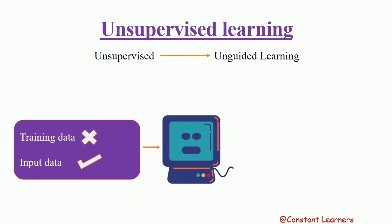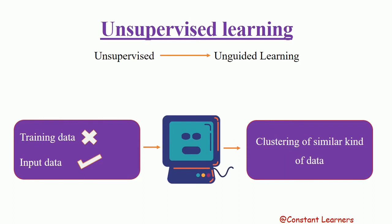So there is no training data in this kind of machine learning, and the machine has no idea what output needs to be generated — it is uninformed, with no knowledge of what output is expected from the input. So what happens when only input data is fed to the computer? It starts clustering similar kinds of data, bringing similar data together.